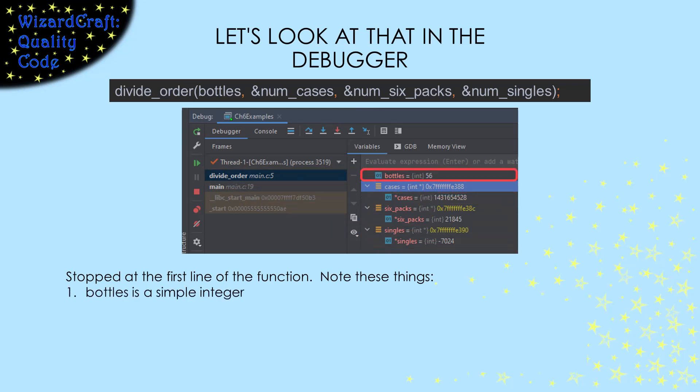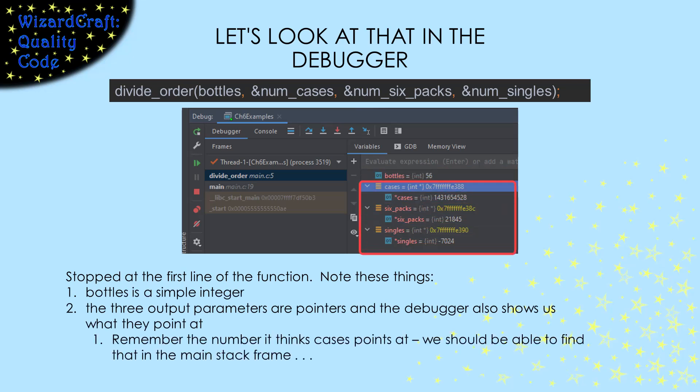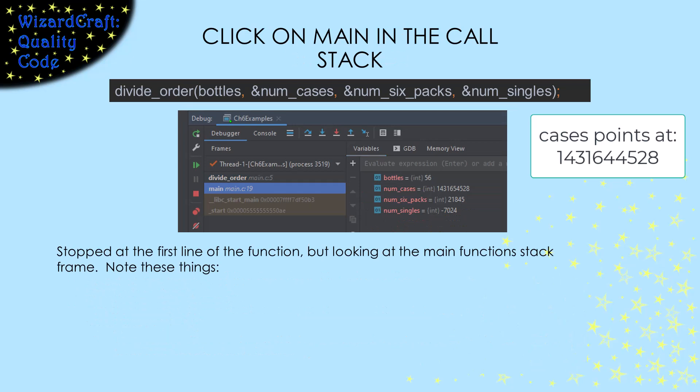Now, bottles is just an integer. The three output parameters are all pointers, and the debugger is nice enough to show us the values that they point at as well. Remember this value, because I'm going to use it to show you where the cases pointer is pointing. I haven't let anything else run. I've just clicked on main's stack frame.